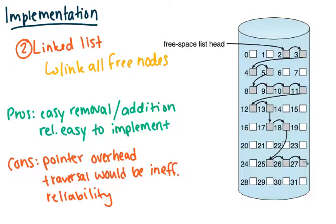Second way you can do it is you can do a link list. You can actually link all of the free nodes together. The pros of this is that there's easy removal and addition and it's relatively easy to implement.